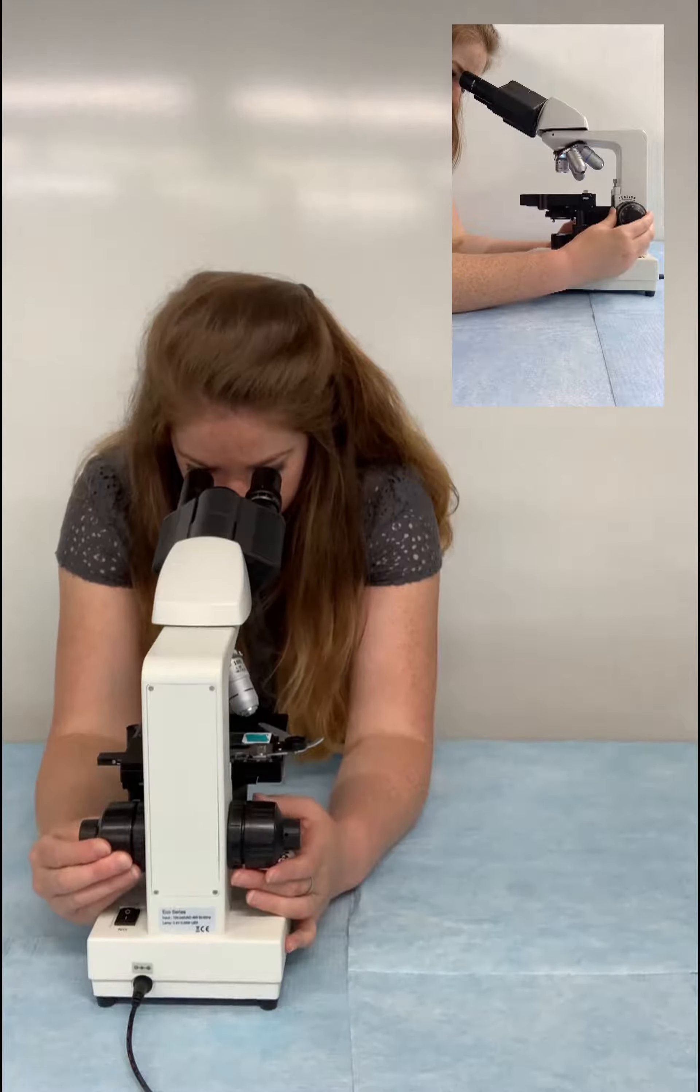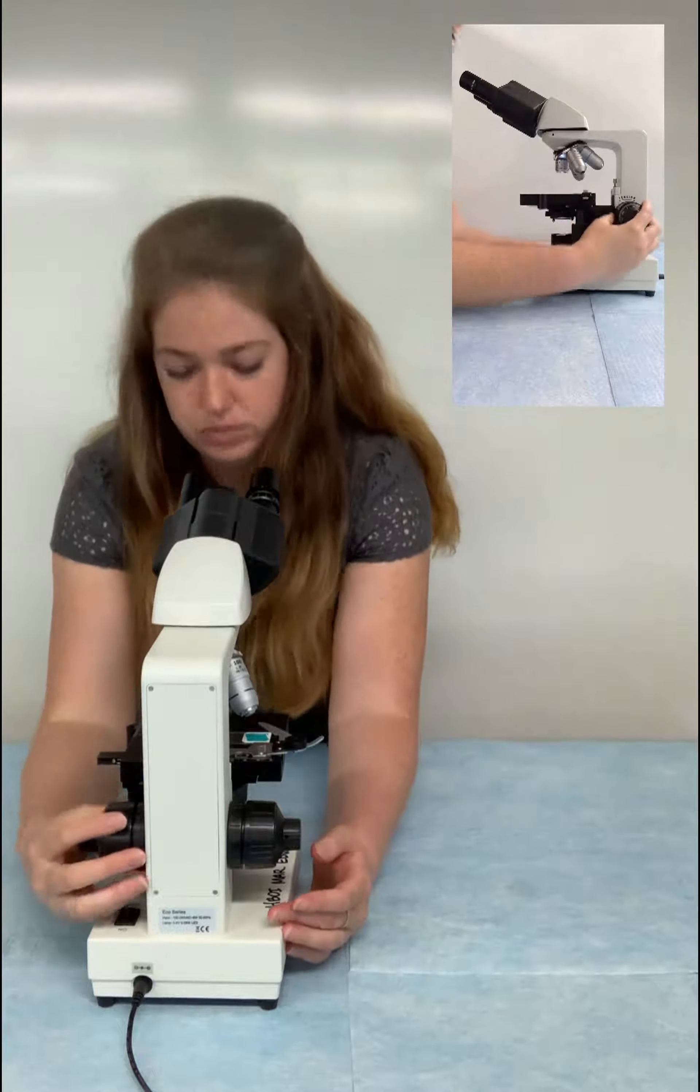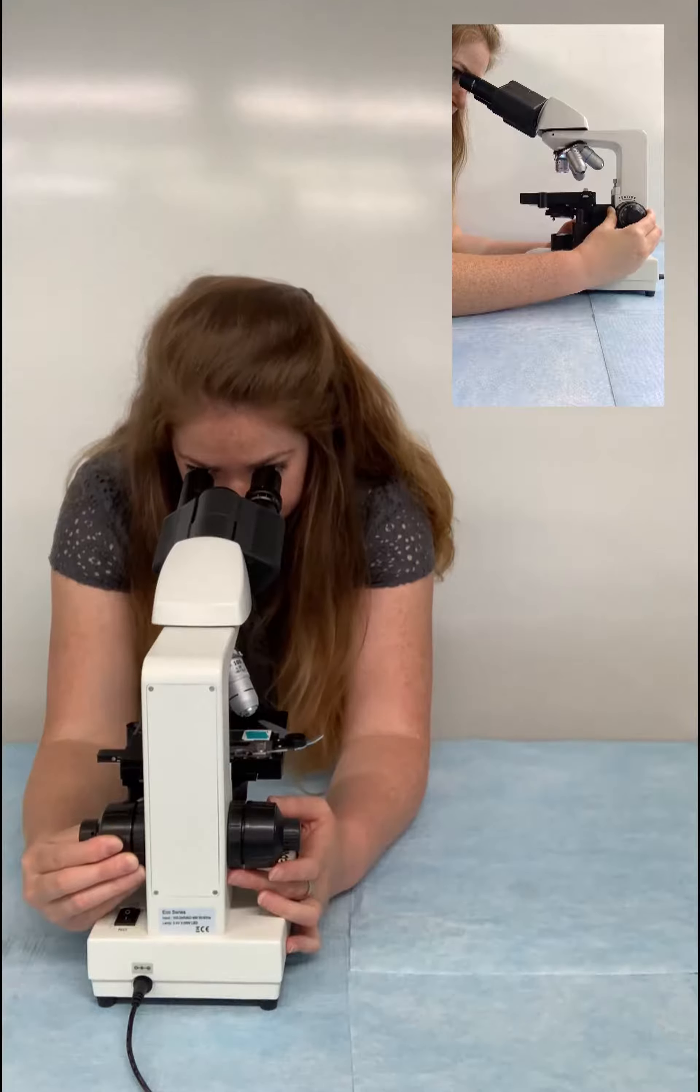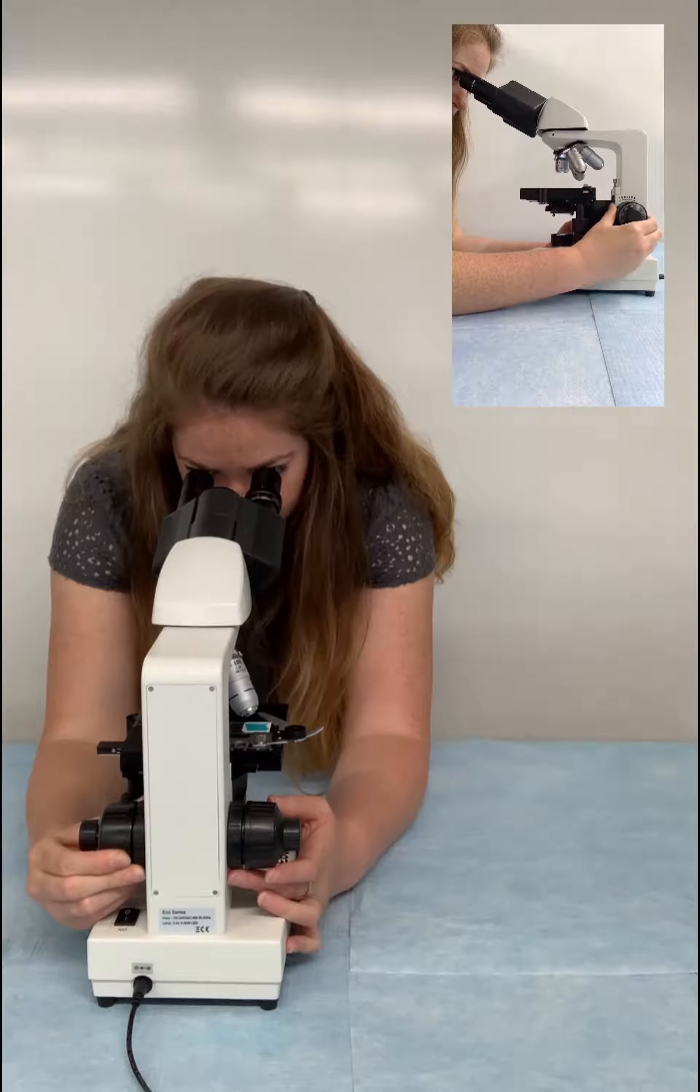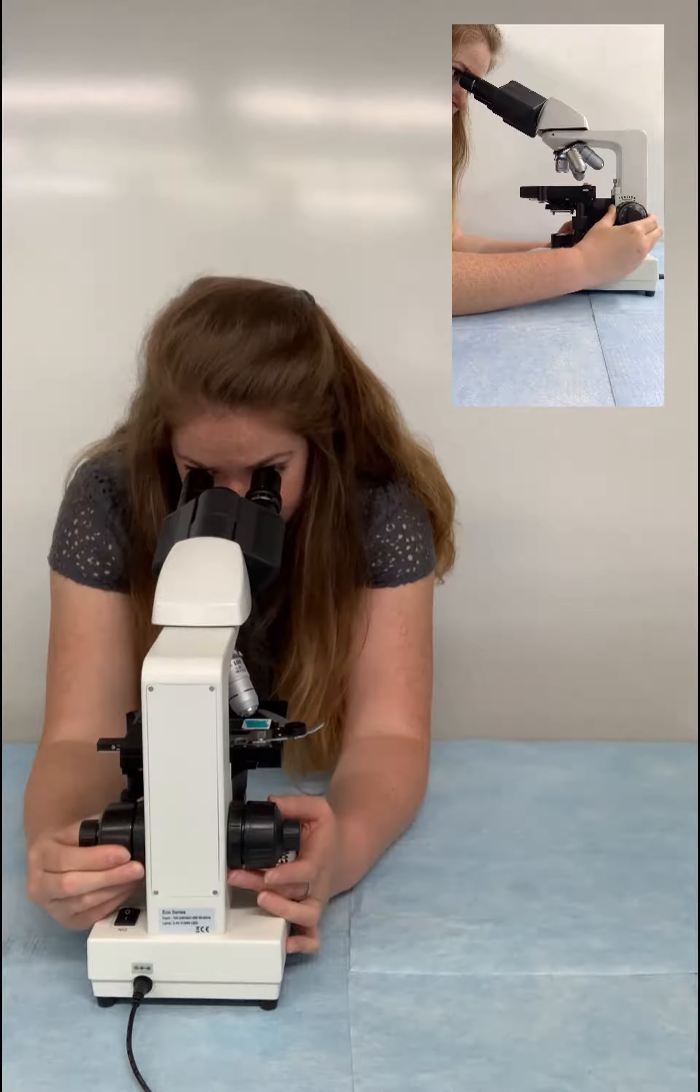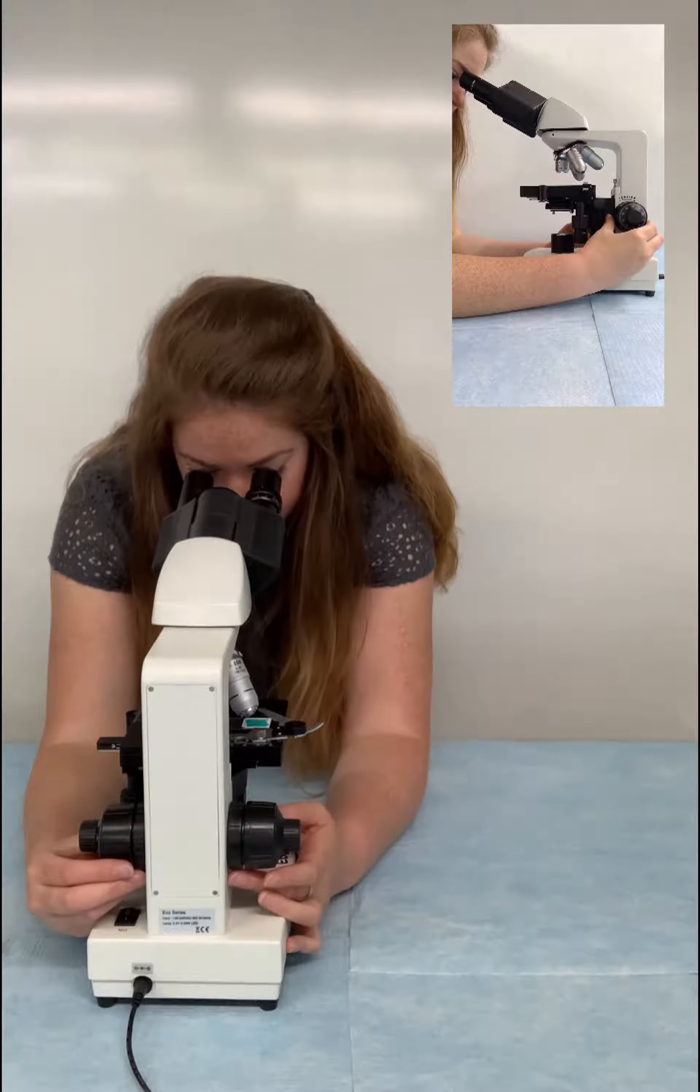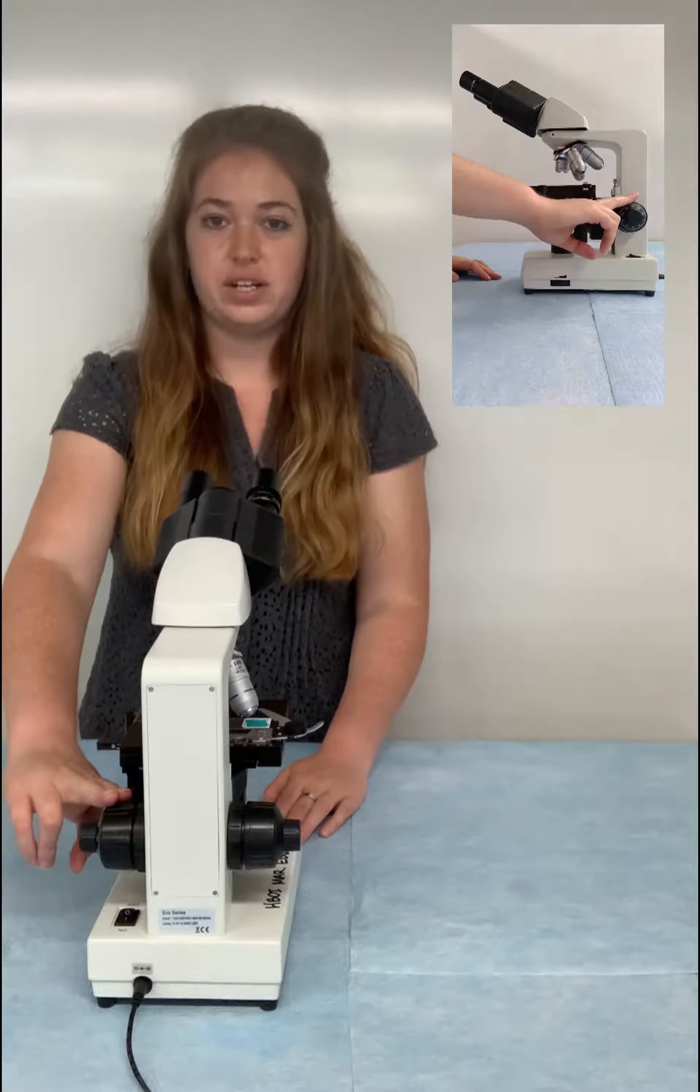This is basically going to move the stage either closer or further away from you. So we want to move it up a little bit. Right now we don't see much of anything. We're going to move this until we can see something in our scope. I just started to see what looks like blurry purple circles. Once we've gotten to that point we can stop with the big coarse knob.